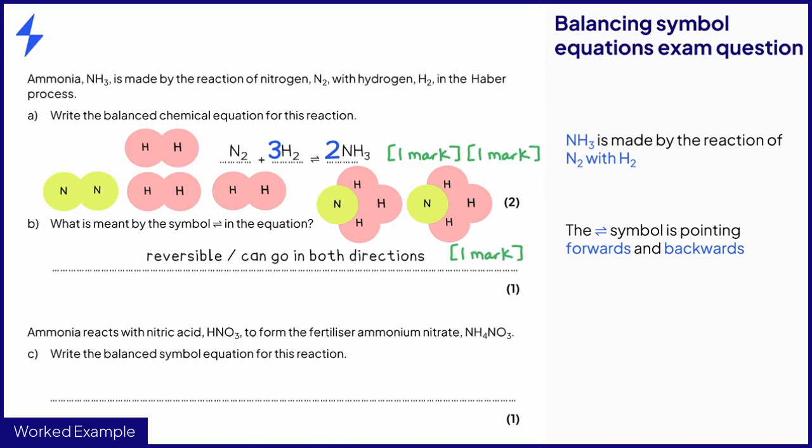In part C, the key information is that NH3 reacts with HNO3 to form NH4NO3. This gives the equation NH3 plus HNO3 arrow NH4NO3. Looking at the question, we can see that the equation is for one mark. The equation is actually balanced and therefore gains the mark.